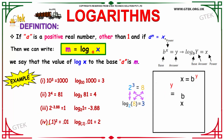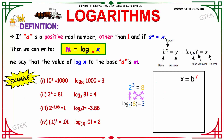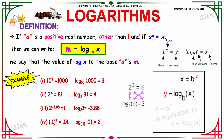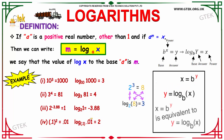Now, the fourth example. 0.1 raised to the power 2 is equal to 0.01. It can be written in logarithmic form as log 0.01 to the base 0.1 is equal to 2. That is, 0.1 raised to the power 2 will give you the answer as 0.01.